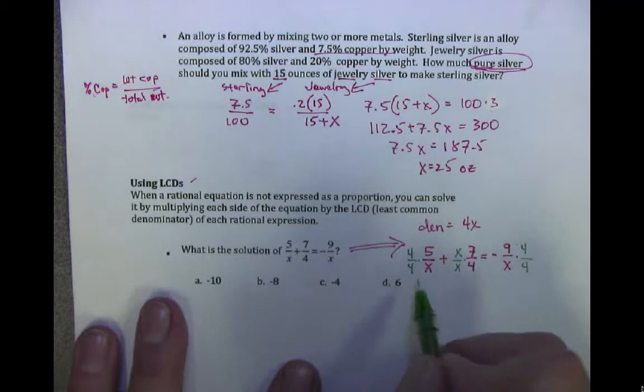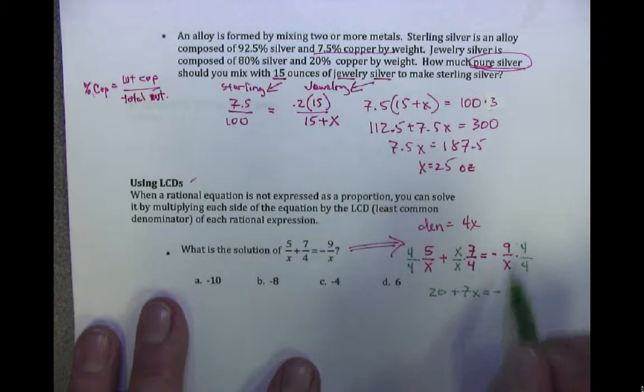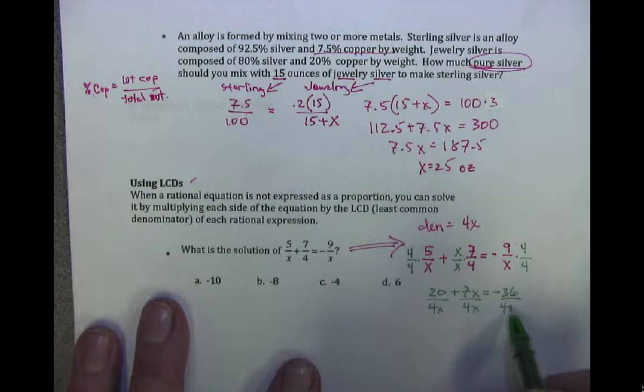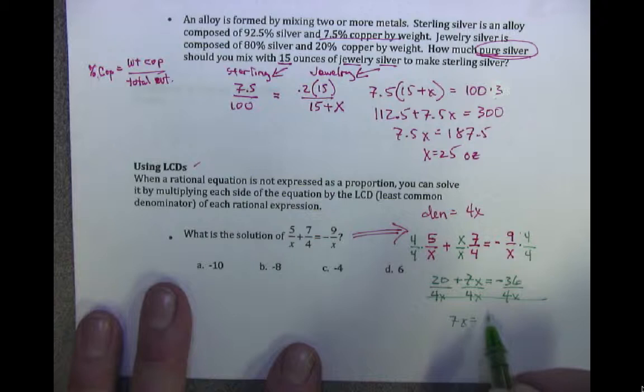Watch — that times that is 20, right? Plus that times that is 7x. Equals negative 36. So far so good. But what about the denominators? The thing is I have 4x under each of those guys — so does it even matter? It doesn't matter at all. I'll just cross those out.